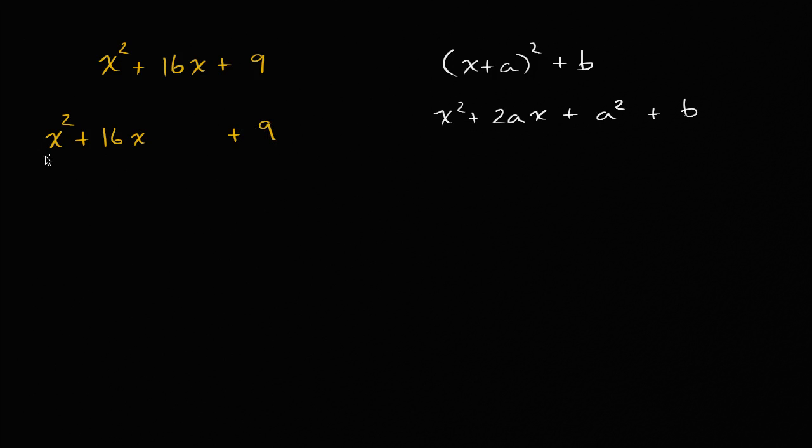And so if we say, all right, we have an x squared here, we have an x squared here. If we say that two ax is the same thing as that, then what's a going to be? So if this is two a times x, well, that means two a is 16, or that a is equal to eight.